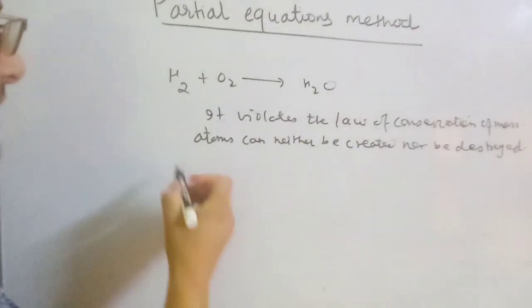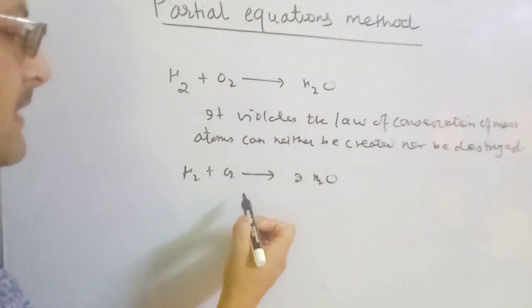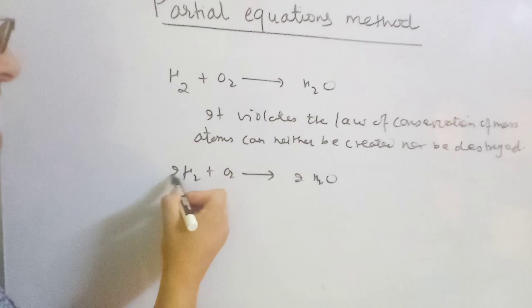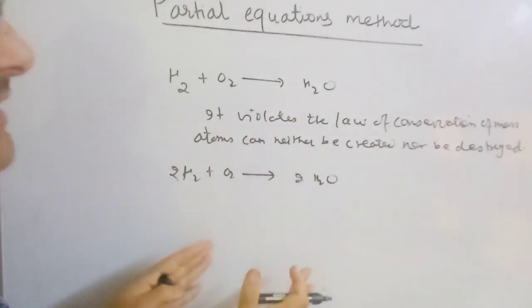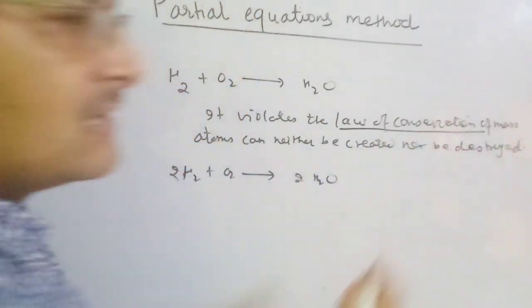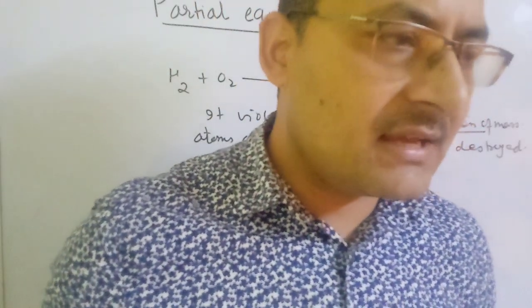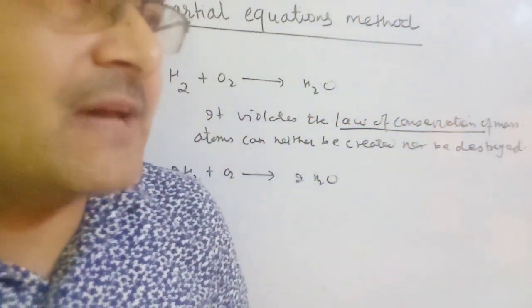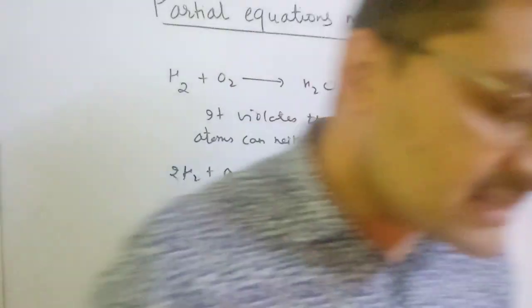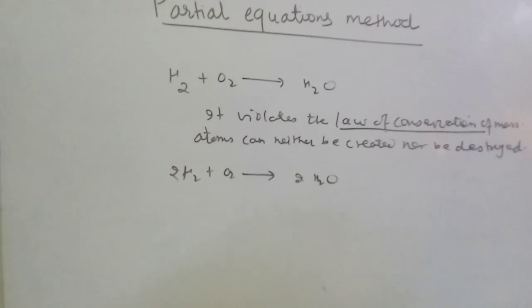The reaction must be balanced like this: H₂ plus O₂ gives 2H₂O. If you balance the chemical reaction this way, then atoms seem to be neither created nor destroyed, so the law of conservation of mass is not violated. Every reaction must be balanced.